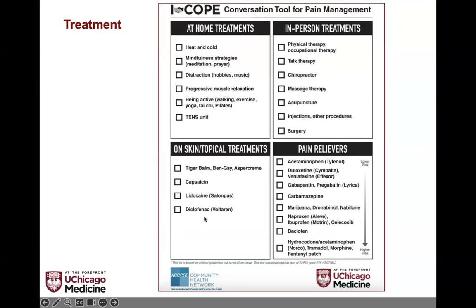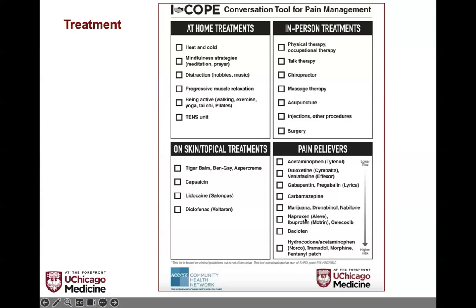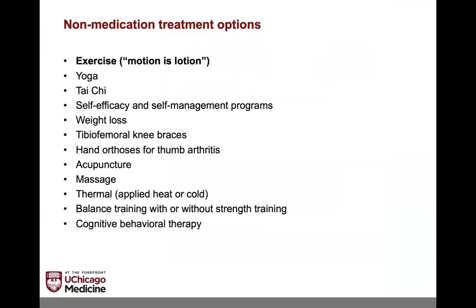Topical creams like diclofenac — an anti-inflammatory — can be helpful. Medication options range from Tylenol to Cymbalta, which addresses both mood and pain, to gabapentin and Lyrica for nerve pain. I try to avoid naproxen and ibuprofen in older adults due to kidney and GI risks. Medical marijuana, particularly CBD, is being tried for some patients. Baclofen is used only if there's truly a muscle spasm issue. Opioids are available if needed to achieve goals.